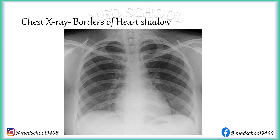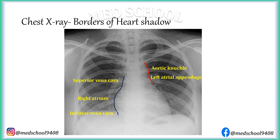Heart occupies the central part above the diaphragm. The right border, from above downwards, is formed by the superior vena cava, right atrium, and inferior vena cava. The left border of the cardiac shadow from above downwards is formed by the aortic arch — also called the aortic knuckle — then the left atrial appendage and left ventricle.